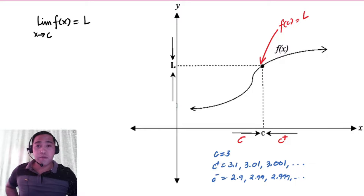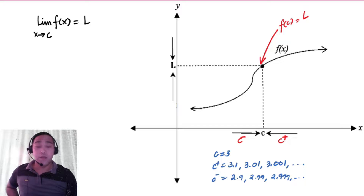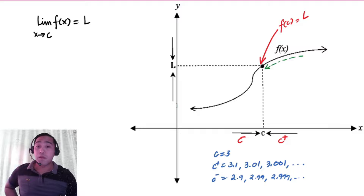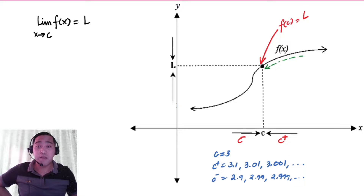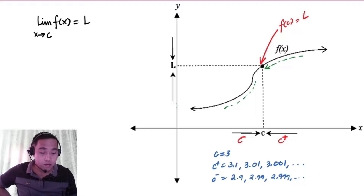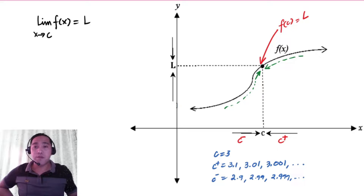So if we are going to observe the graph when x approaches C from the right, the graph will go downward going to L. And when the value of x approaches C from the left, the graph will go upward going to L. That makes the limit of a function exist when x approaches C.